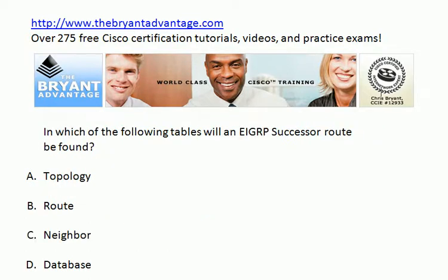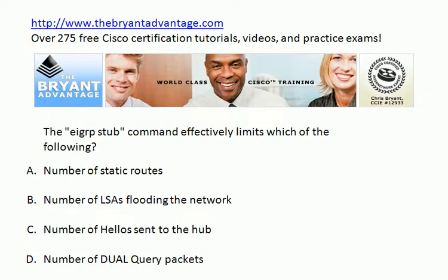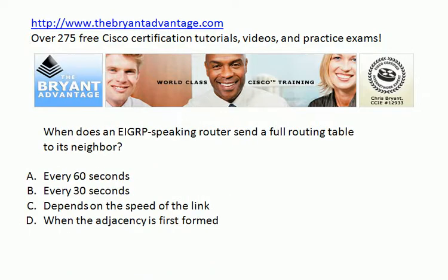Question 6: in which of these tables will an EIGRP successor route be found? Question 7: the EIGRP stub command effectively limits which of the following? Question 8: when does an EIGRP speaking router send a full routing table to its neighbor? Is it every 60 seconds? Every 30 seconds? Does it depend on the speed of the link? Or is it when the adjacency is first formed?